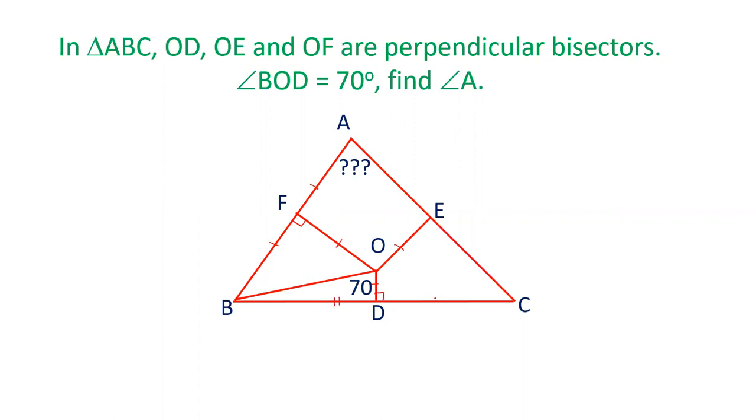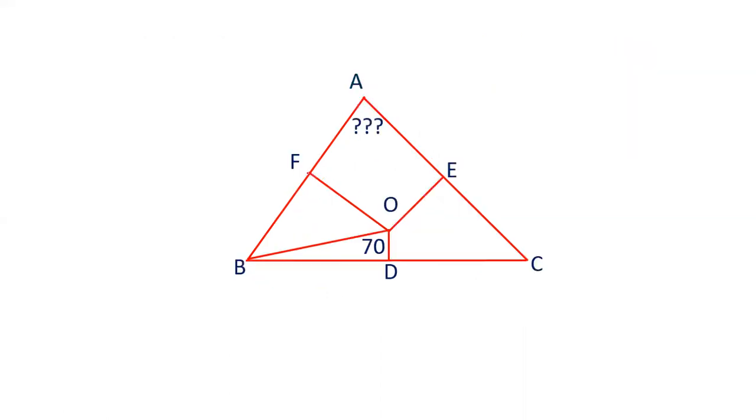OD is perpendicular and BD and DC are equal. OE is perpendicular. AE is equal to EC. Given that angle BOD is 70 degrees, we have to find out the value of angle A. Let's see if and how we can solve this question.